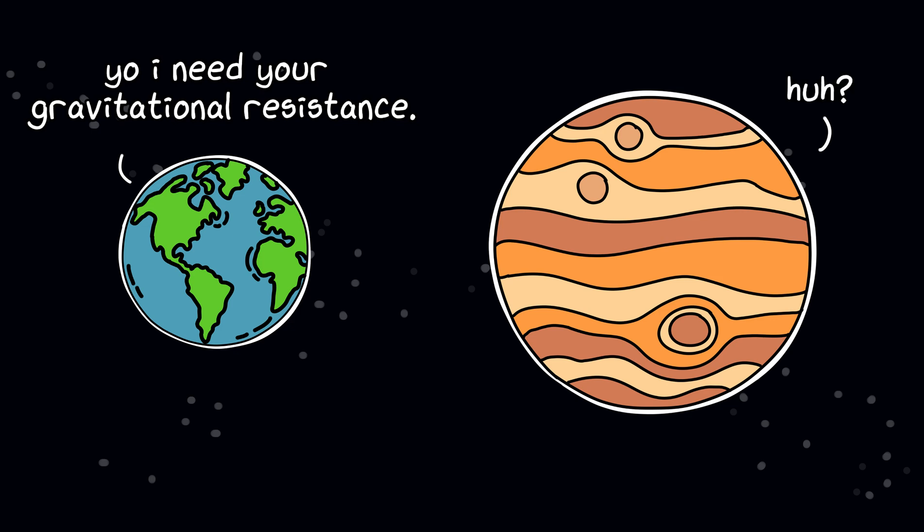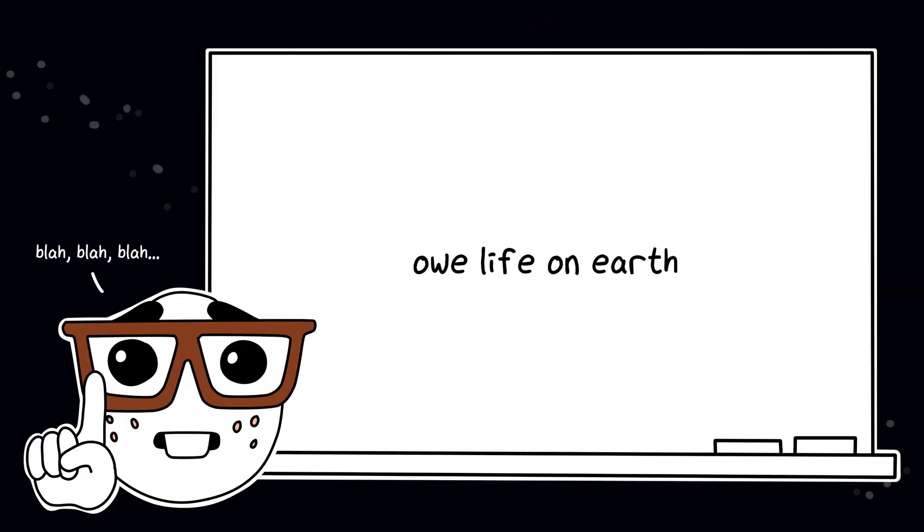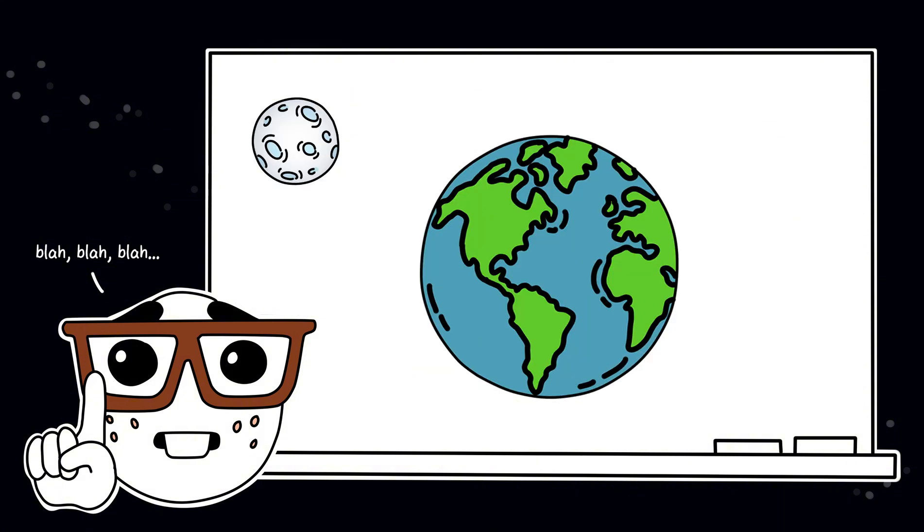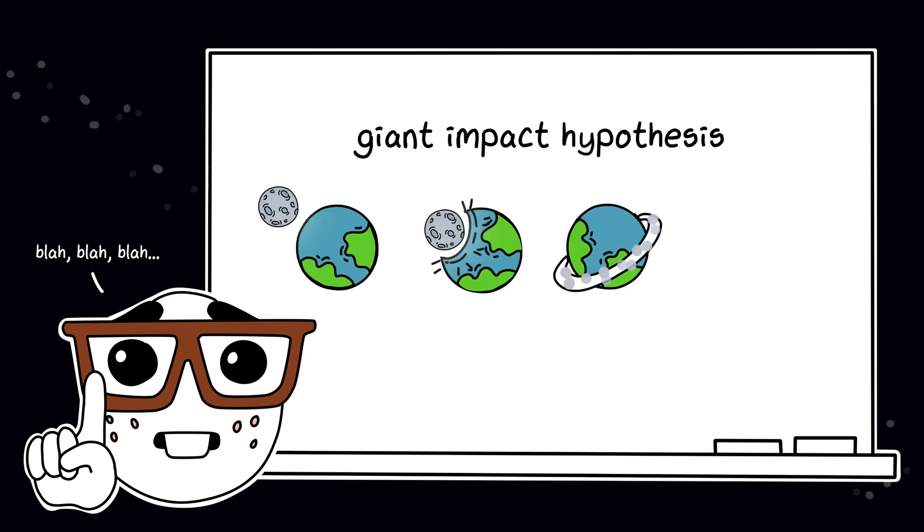And let's be real. Jupiter's got its own drama. Busy flinging comets and having gas giant tantrums. Some scientists say we owe life on Earth to a cosmic smackdown. When a Mars-sized rock, Theia, KO'd baby Earth. The moon was born from the debris. And that chaos may have kicked off plate tectonics and our magnetic field. That's the giant impact hypothesis.